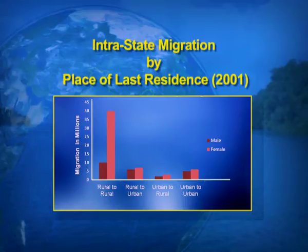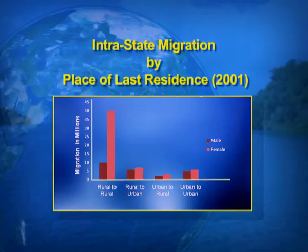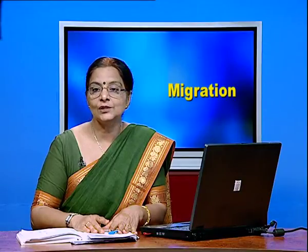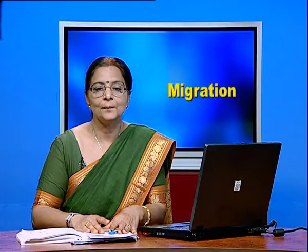In the second stream — rural to urban migration — females are also outnumbering males. In the third stream, urban to rural, again the females outnumber males. And lastly, in urban to urban migration, females are again outnumbering males. The reasons for this female predominance will be discussed when we take up the causes of migration.